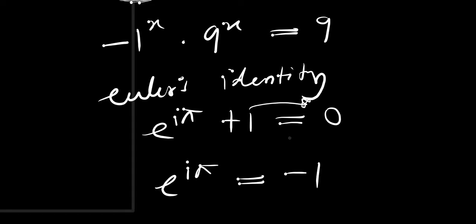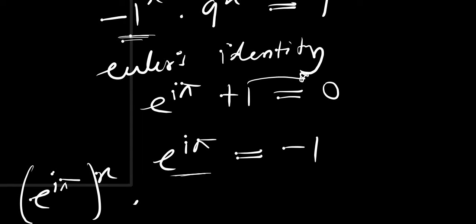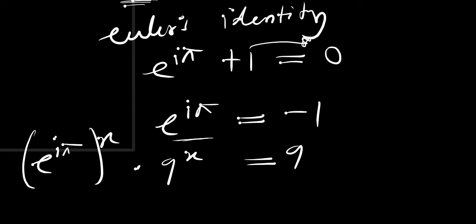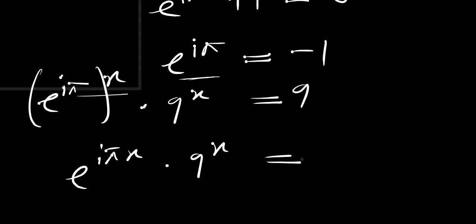That means we replace negative 1 to the power x with e raised to the power of i times pi, all raised to the power of x. Multiplying the exponents, we have e raised to the power of i pi x, times 9 to the power x, equals 9.